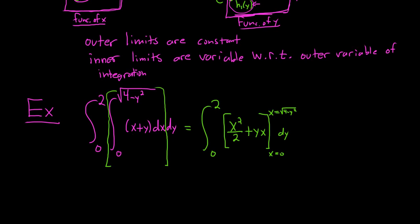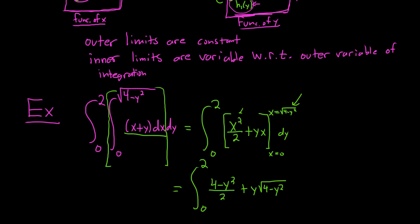We're replacing x values with the limits of integration because we integrated with respect to x. Now we evaluate: plug in the top limit first, then subtract the bottom. So we're replacing x with the square root of 4 minus y squared — squaring it gives 4 minus y squared over 2, plus y times the square root of 4 minus y squared. When we plug in 0, everything is 0, so we don't write it. Then we have dy.